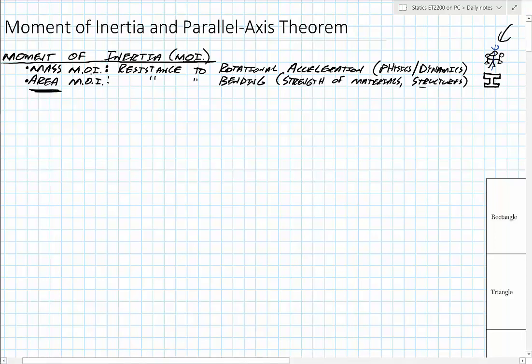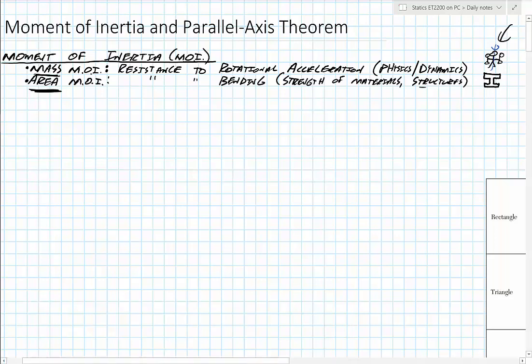The difference between those: for mass moment of inertia, those going on to dynamics will deal with it because it's related to rotational acceleration. Versus the area moment of inertia, what we're talking about is resistance to bending — relevant to strength of materials and structures classes. For example, an I-beam has a high moment of inertia, meaning it resists bending or movement. That's the reason we care about it.